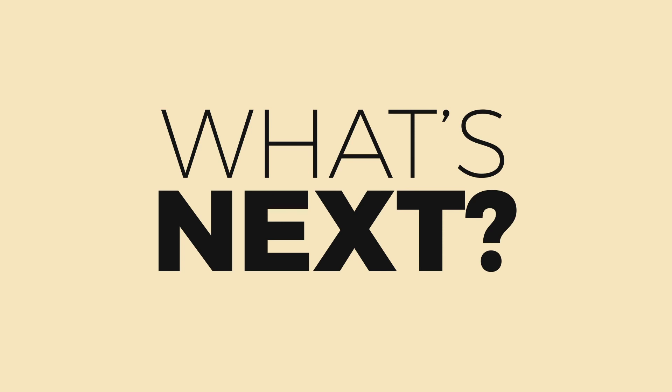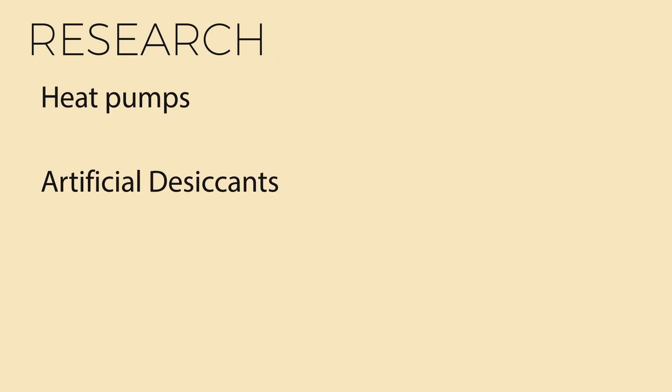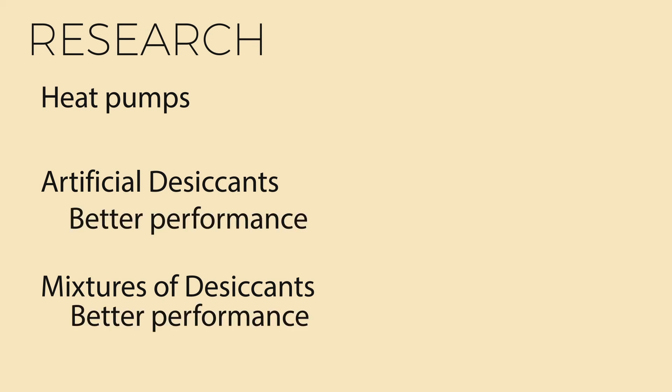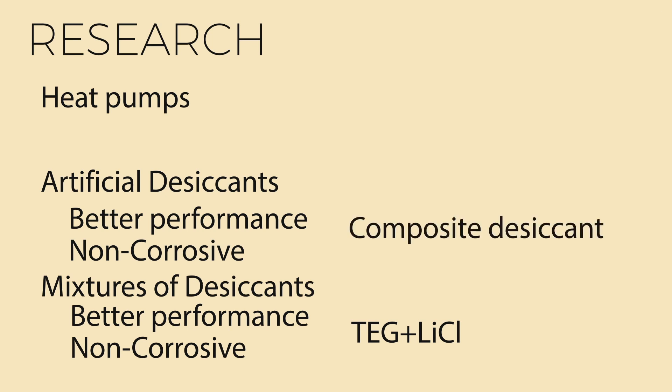So where is this technology going and how does it compare to its alternatives? Recently, researchers have started incorporating heat pumps to transfer heat from the dehumidifier to the regenerator, achieving very high coefficients of performance. Extensive research is focused on developing artificial desiccants and mixtures of different desiccants that have better dehumidification capability and are non-corrosive to equipment such as pumps and heat exchangers used in the system. Triethylene glycol mixed with lithium chloride and calcium chloride significantly increases performance but doesn't solve the problem of corrosion. However, a composite desiccant developed by confining salts to porous adsorbents improves performance, reduces size, and bypasses the corrosive equipment altogether.